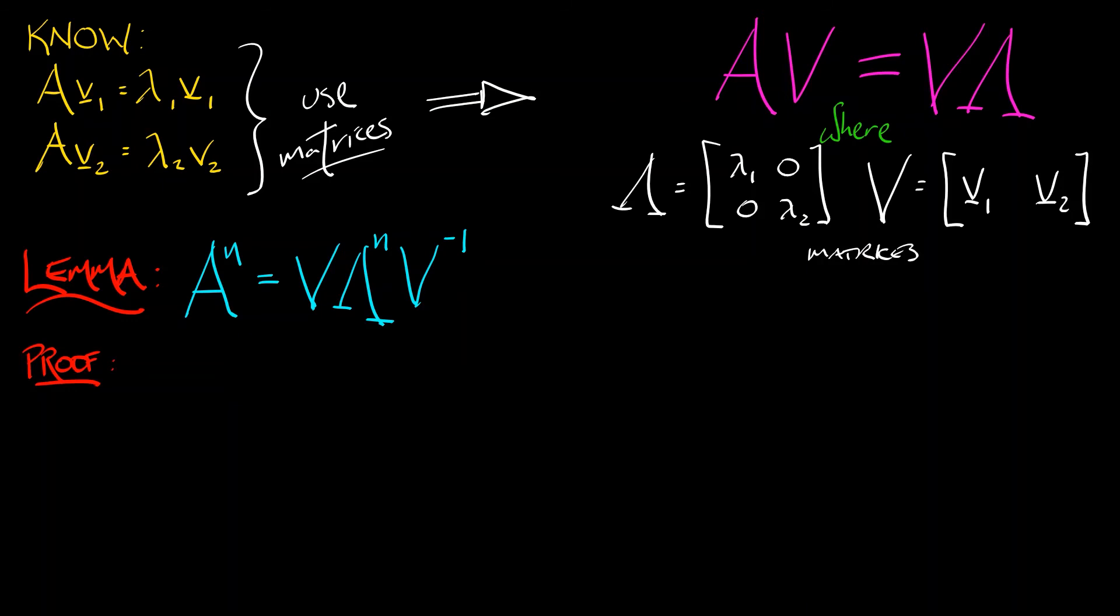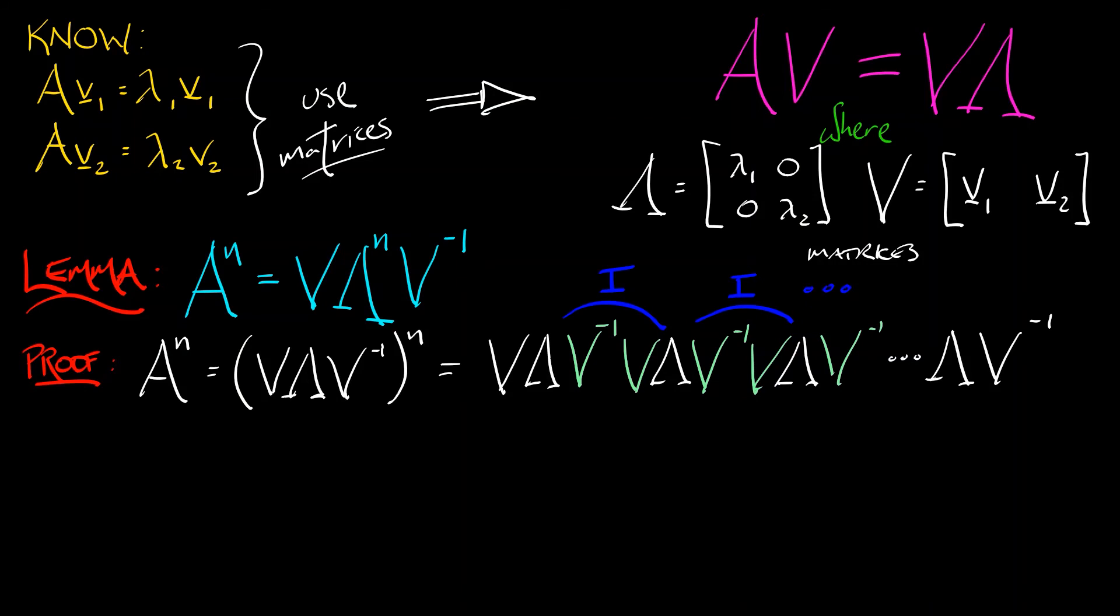Here's the proof. I know because AV equals V lambda, and V having independent columns is an invertible matrix, I can write A as V lambda V inverse, so that A to the n is quantity V lambda V inverse to the n. Now, if we write that out, what are we going to get? We're going to get V lambda V inverse times V lambda V inverse times V lambda V inverse. We keep going. And what I see is that we have incident copies of V and V inverse. Those together multiply to be the identity matrix. The identity matrix does nothing. And so in the end, what we get is V followed by a whole bunch of lambdas. How many? N. And then V inverse tacked on at the end. That's it. That's what we're trying to prove.